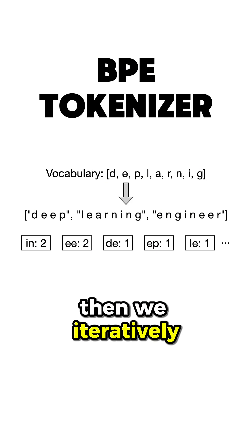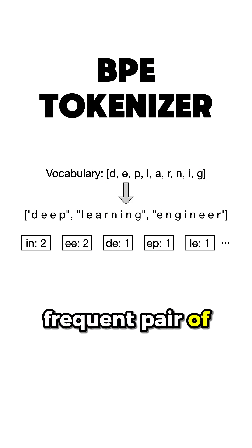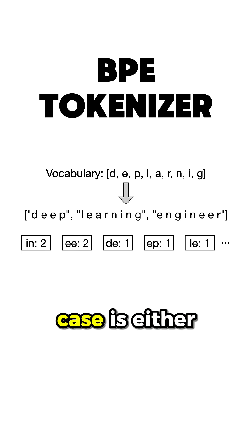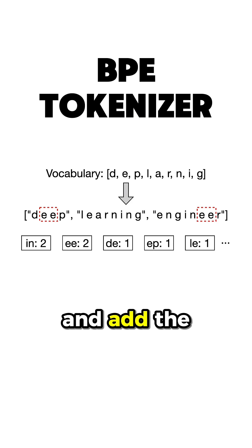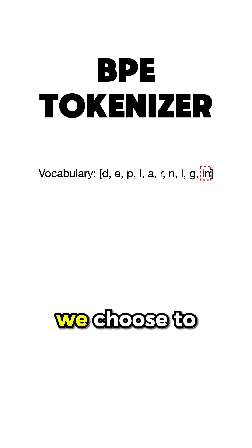Then we iteratively merge the most frequent pair of characters, which in our case is either IN or EE, and add the merge group into the vocabulary. Let's say that we choose to add IN.